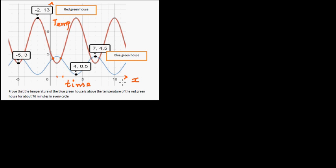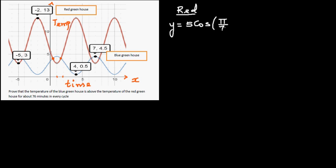Temperature is on the y-axis and time is on the x-axis. For the red graph, the equation is y = 5cos(π/3 · x + 2π/3) + 8. The amplitude was 5 because the minimum is 3 and maximum is 13, so the baseline is the average, which is 8. The distance from 3 to 8 gives an amplitude of 5. The period was 6, so the coefficient is π/3.